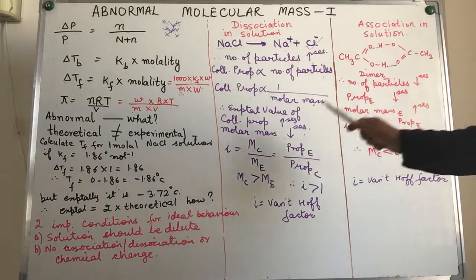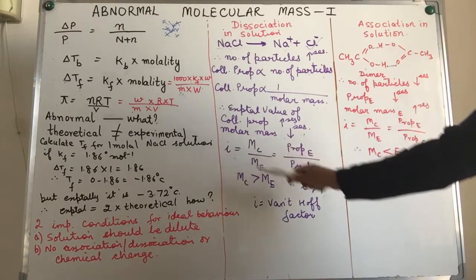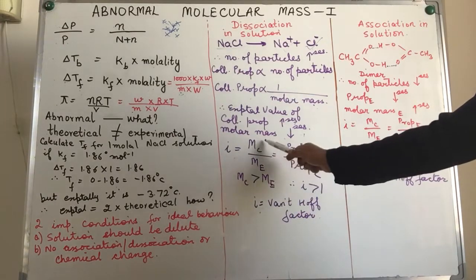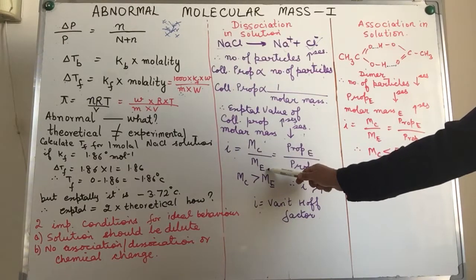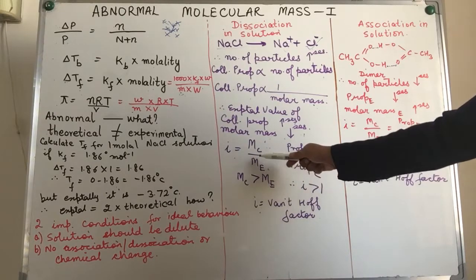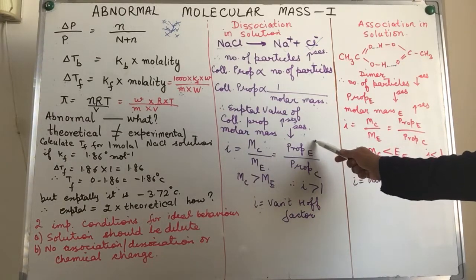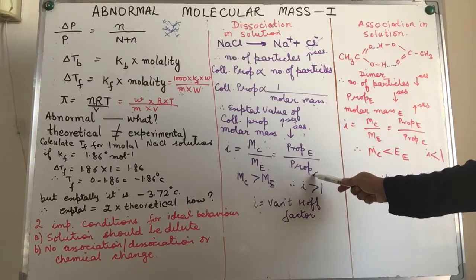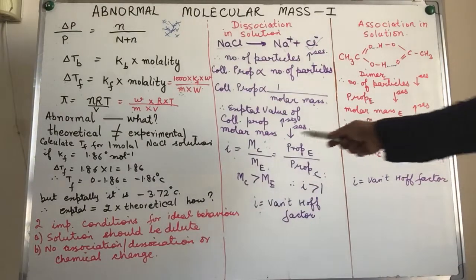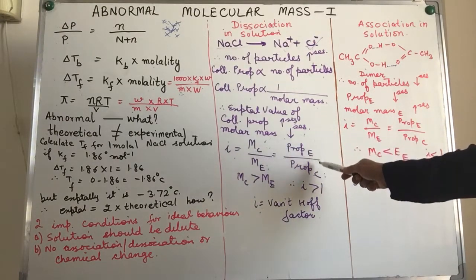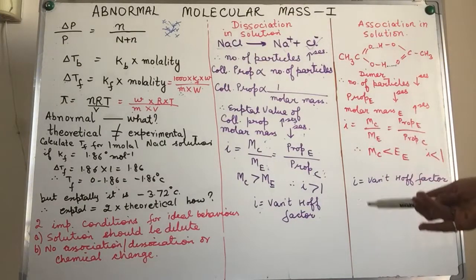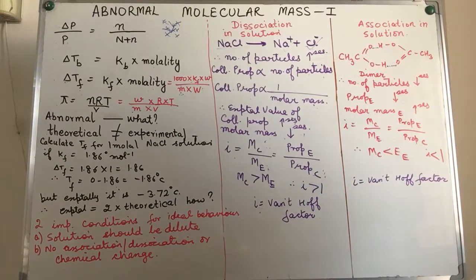To account for this difference, we introduce a factor called the van't Hoff factor, denoted by the symbol i (iota). This i is calculated as the calculated molar mass (Mc) divided by the experimental molar mass (Me). Alphabetically, C comes before E, so Mc/Me. Since colligative property is inversely proportional to molar mass, i also equals the experimental colligative property divided by the calculated (theoretical) colligative property. This applies to any of the four — osmotic pressure, depression in freezing point, elevation in boiling point, or relative lowering of vapor pressure.